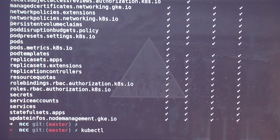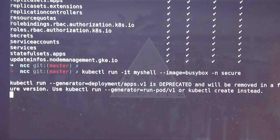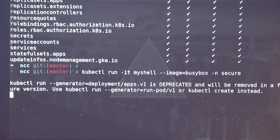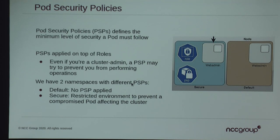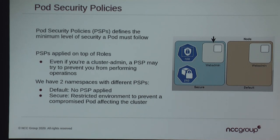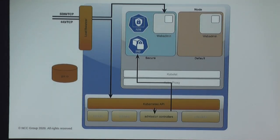First, I try to run a pod — kubectl run a BusyBox image named my-shell in the secure namespace. This checks out, but I've created a demo that is designed to fail. It's blocked. Why? Because of a pod security policy. A PSP is a policy on top of your cluster admin roles or whatever permissions you have access to, which further restricts what you can do. We have full access to that namespace, but there's a PSP on top that says you can't run under certain conditions. Our environment has two namespaces: secure and default. Secure has a PSP, default does not.